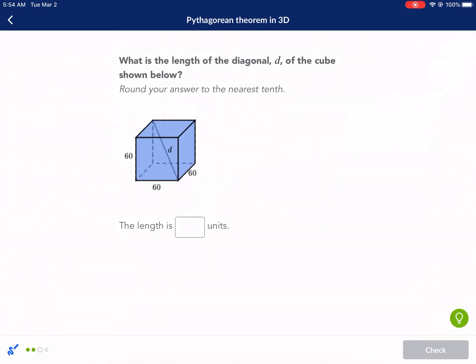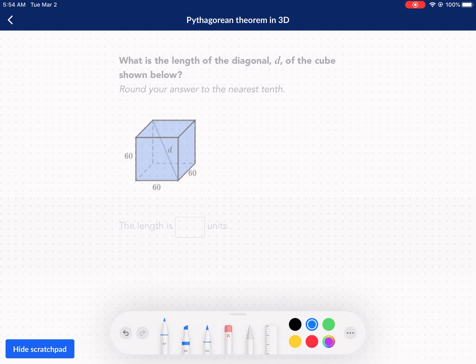All right, next question. What is the length of diagonal D of the cube shown below? Ooh, this one's a tough one. Good problem though. Okay, so we have this right here. That is going to be a length here. Let's look for some more lengths here to consider. We have this guy right here. And then we have this diagonal here. Okay, this one's actually a multi-step problem.